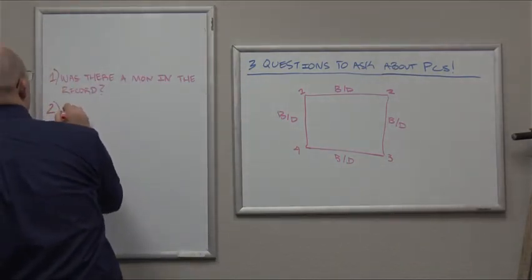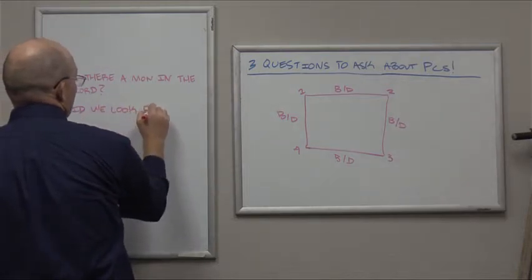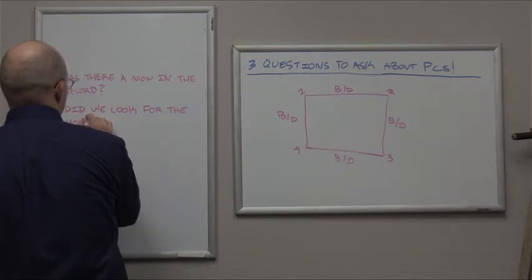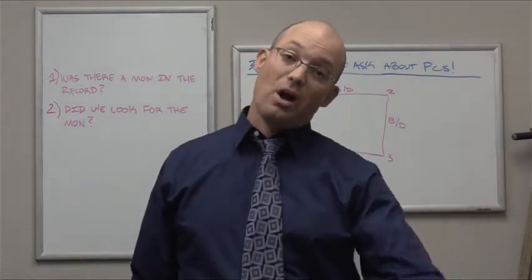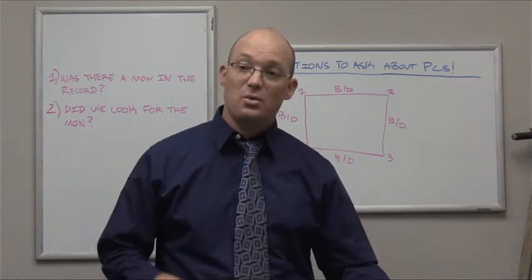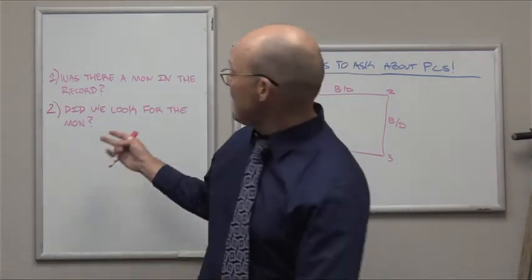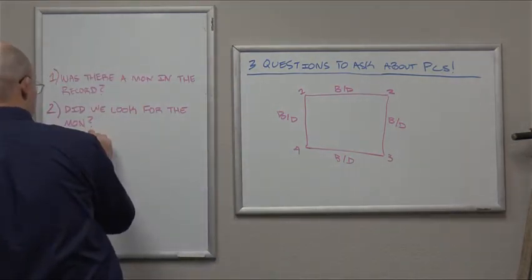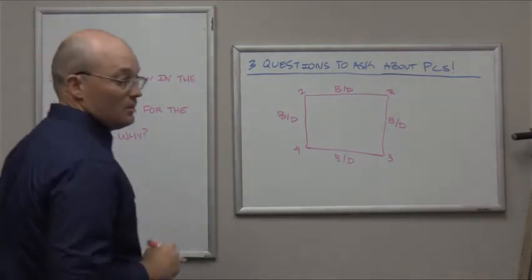So here's the second question. The second question is, did we look for the monument? She needs to know, did we look for it? Did we look for what was there in the record? So if the survey map says there was a two-inch iron pipe there, she needs to know, did we look for the monument? Now she may have to check the field notes to answer that question, or she may have to look at the raw data in Trimble Business Center, or she may have to ask the field crew, did you look for this corner? So if she checks the notes and she checks the raw data and she can't find an answer, then she might have to talk to the crew. So she needs to find out, did we look for it? Now, if the answer is no, we didn't look for it...